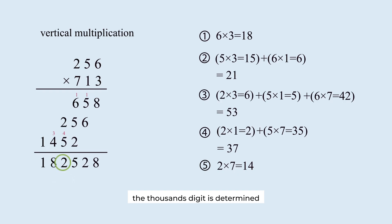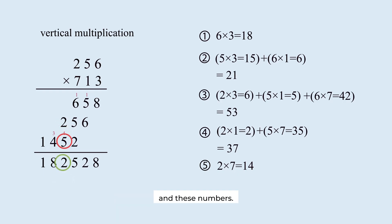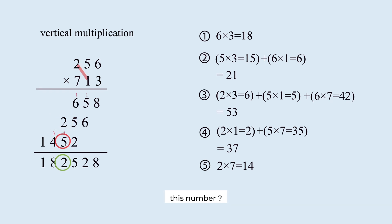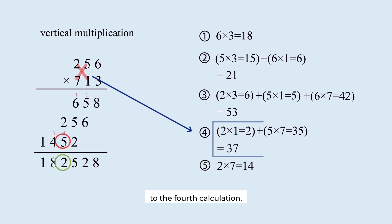The thousands digit is determined by the carryover from the hundreds digit and these numbers. This number is obtained by multiplying these numbers, and this number by multiplying these numbers. This step corresponds to the fourth calculation.